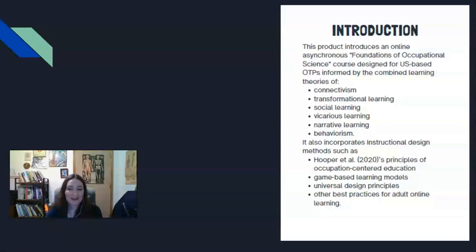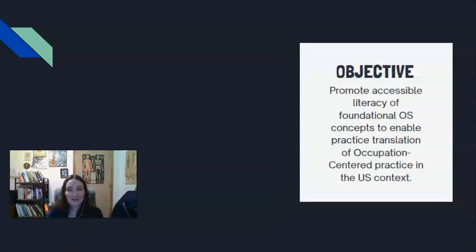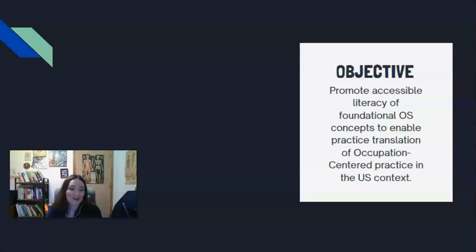The course also incorporates many instructional design methods such as Hooper et al.'s principles for occupation-centered education, game-based learning models, universal design principles, and best practices for online adult education. The objective is truly to promote accessible literacy of foundational occupational science concepts that will enable practice translation of occupation-centered practice in the US context.